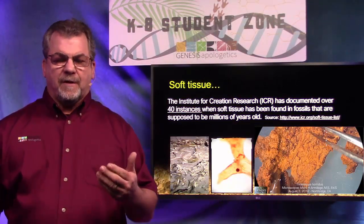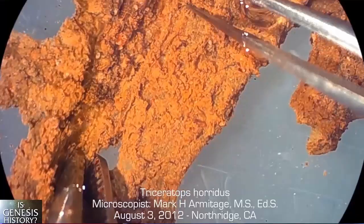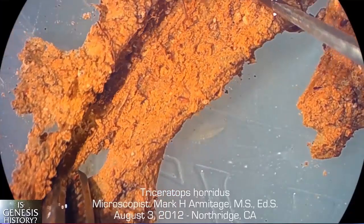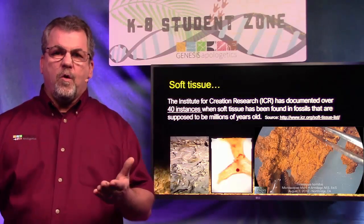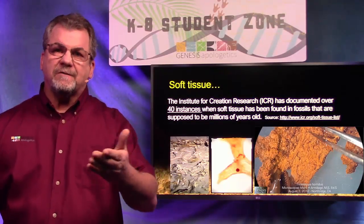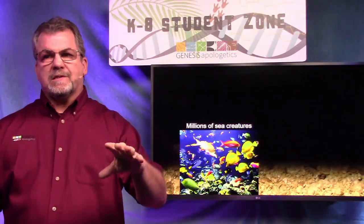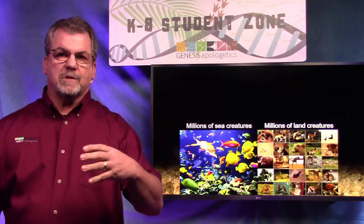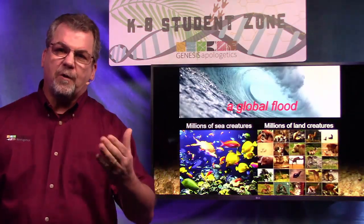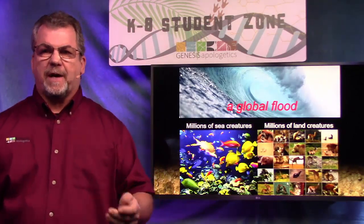Finally, in the fossil record, we find soft tissues in fossils that are supposed to be millions of years old — things like blood cells, blood vessels, nerves, and collagen. If they're that old, why do we still find soft tissues in them? This has been talked about and written about in many mainstream scientific journals. So we have millions of sea creatures mixed in with millions of land animals — what could do that? The global flood, just like the Bible teaches.